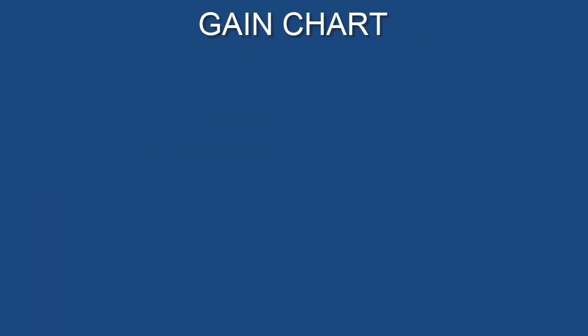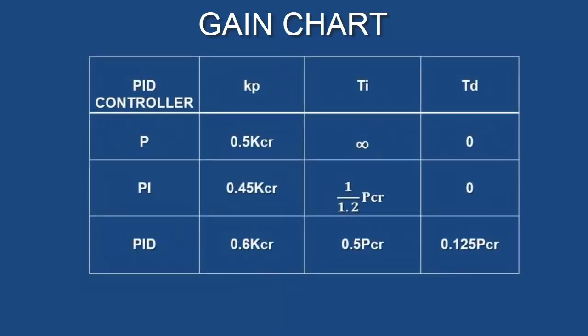Let us start to discuss the first method based on direct adjustment of controller parameters. Ziegler-Nichols defines the controller parameters with the help of a table; the calculations in this table were finalized after a series of experiments done on industrial processes. This table is known as the gain estimate chart. The controller parameters for the Ziegler-Nichols frequency response method are given in terms of critical gain KCR and critical period PCR.